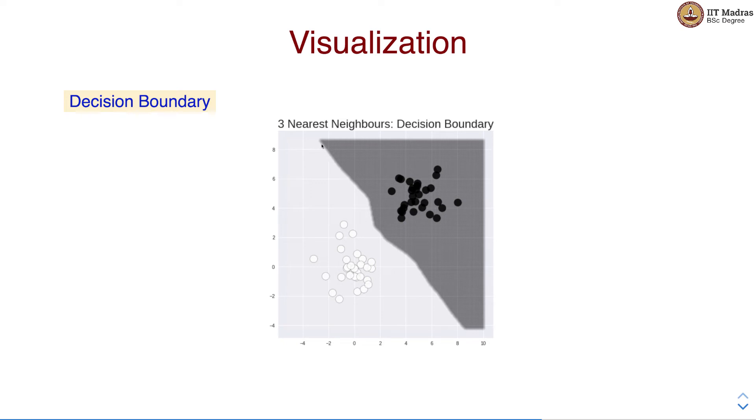So this is the decision boundary that we found for our classification problem between the black and the white classes in the given example.